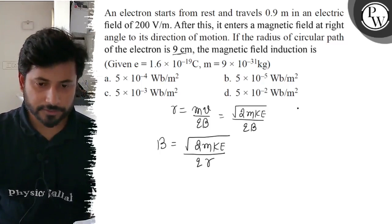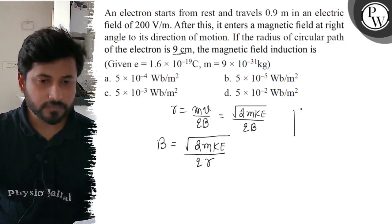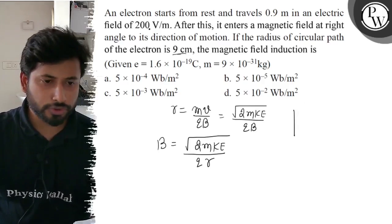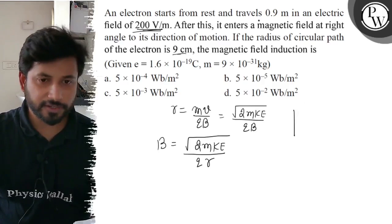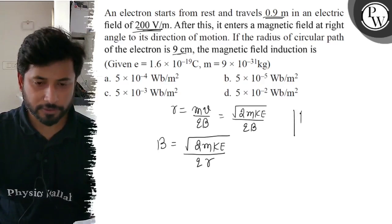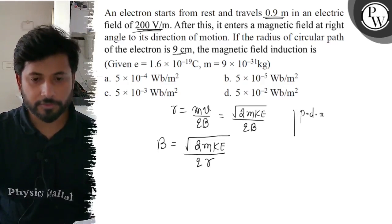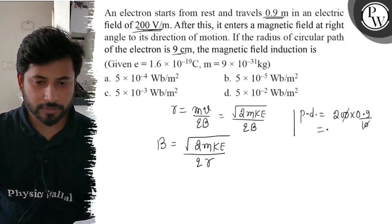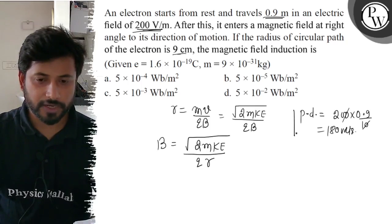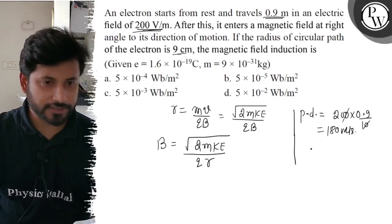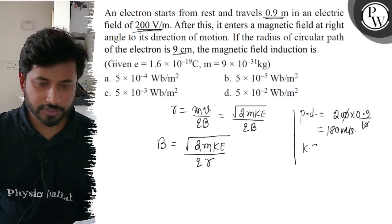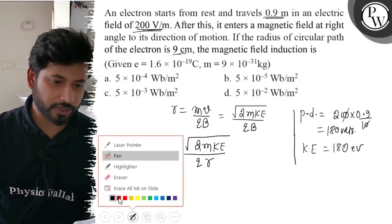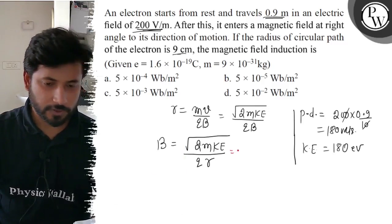Ab dhekhiye dhyan se. Aapko pata chalega ki 200 volt per meter wale electric field mein 0.9 meter tak travel kiya hai. Toh potential difference kya hoga — potential difference V equals E into d, equals 200 into 0.9, equals 180 volt. Toh 180 volt ka agar accelerating voltage ho toh electron ki kinetic energy ho jaegi 180 electron volts.